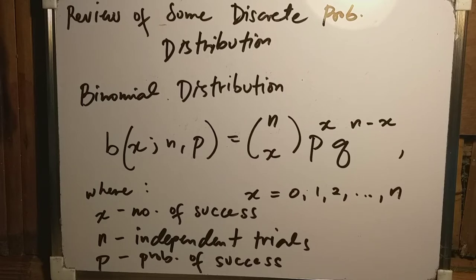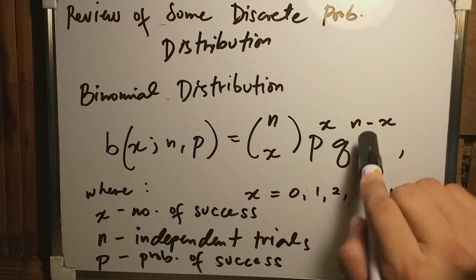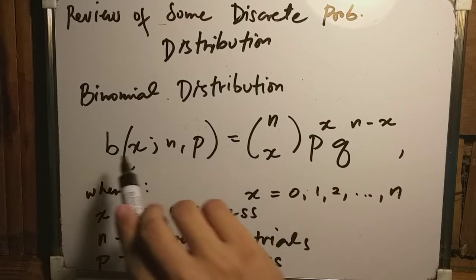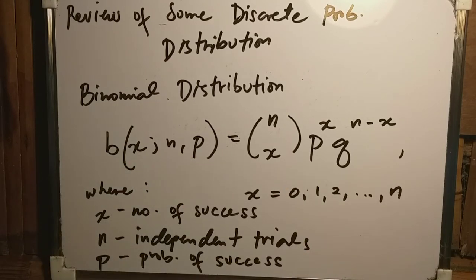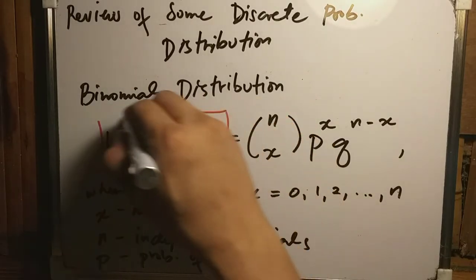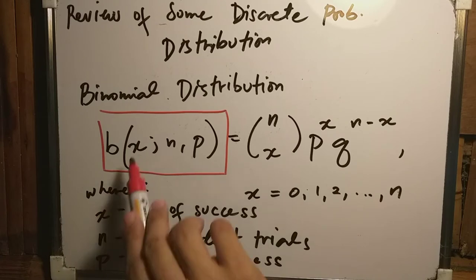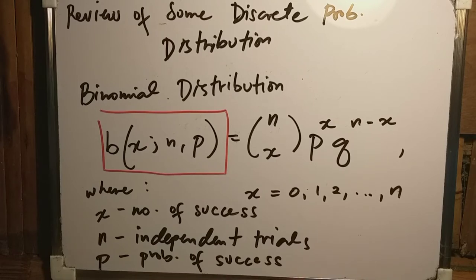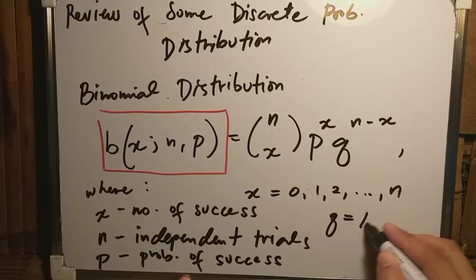The binomial distribution has the form: n choose x, p to the x, q to the n minus x. The notation for the binomial distribution with parameters n and p is B(x; n, p). Here, x is the number of successes, n is the number of independent trials, p is the probability of success, and q equals 1 minus p.